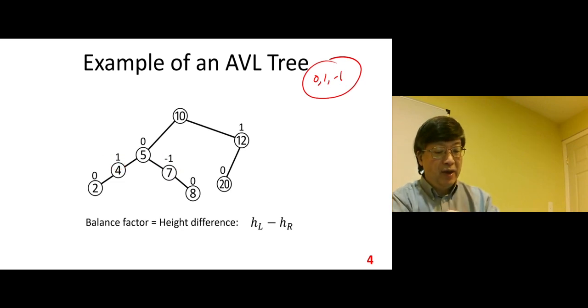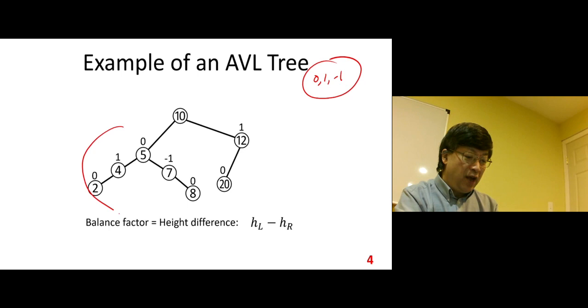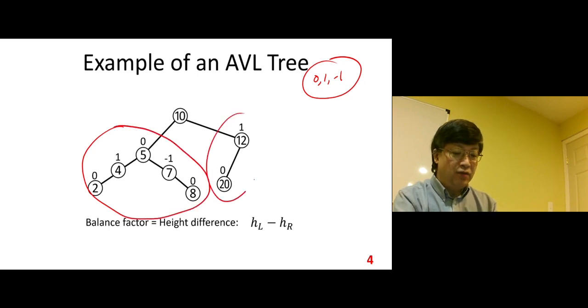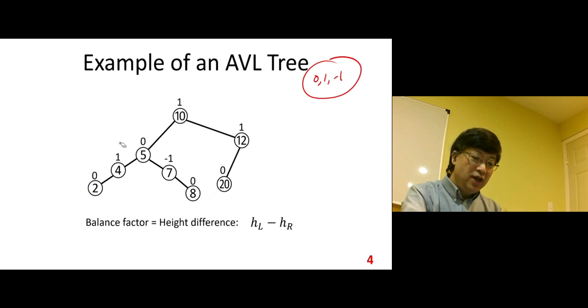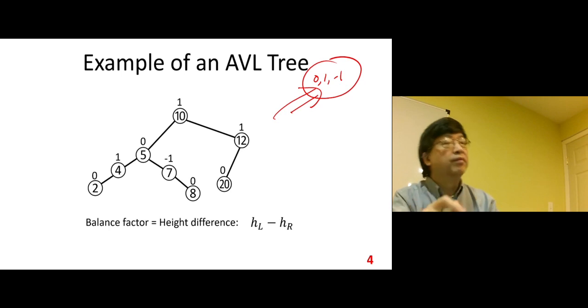Then another one, 1 minus 0, 1. How about that one? For 10, that's 2. This is 1. 2 minus 1, 1. You can see all the balance factor numbers fall into one of the three cases, so it is a legal AVL tree.